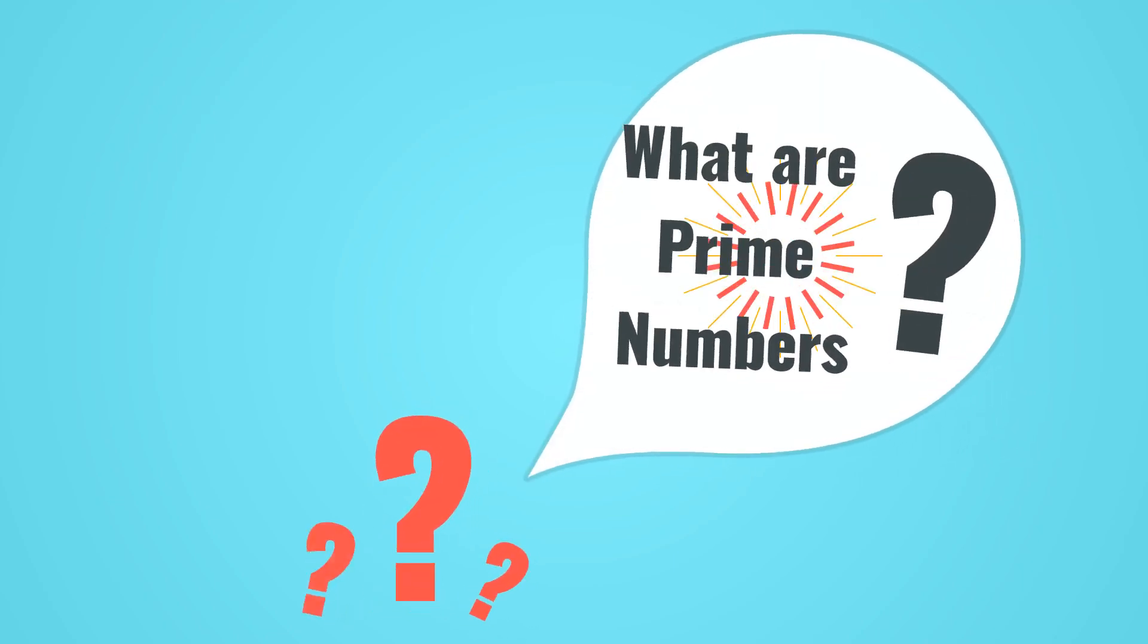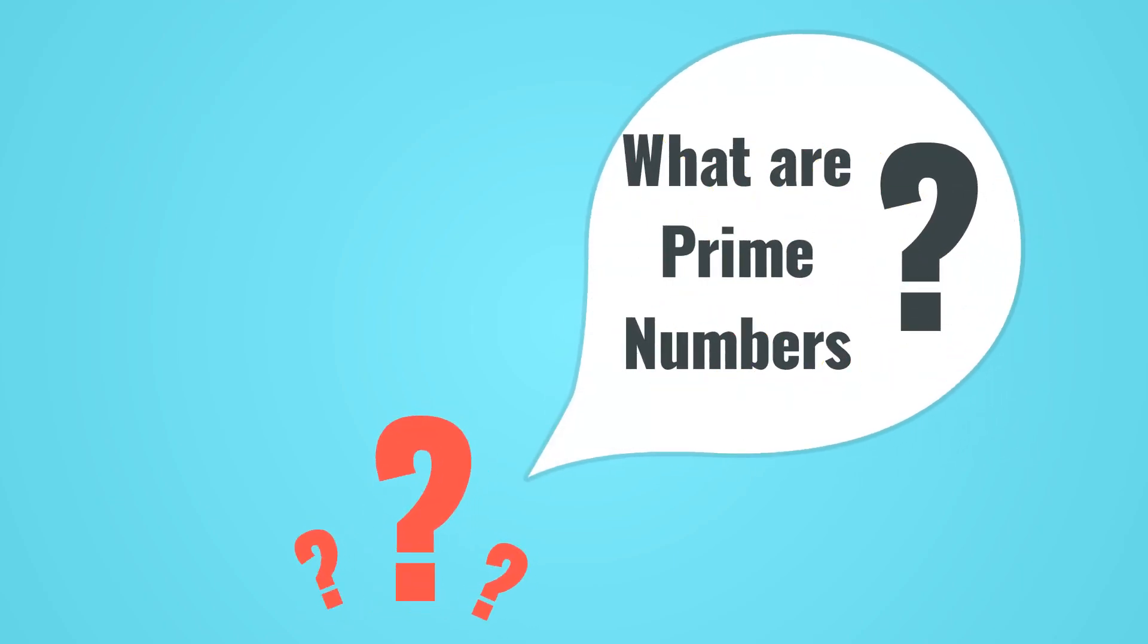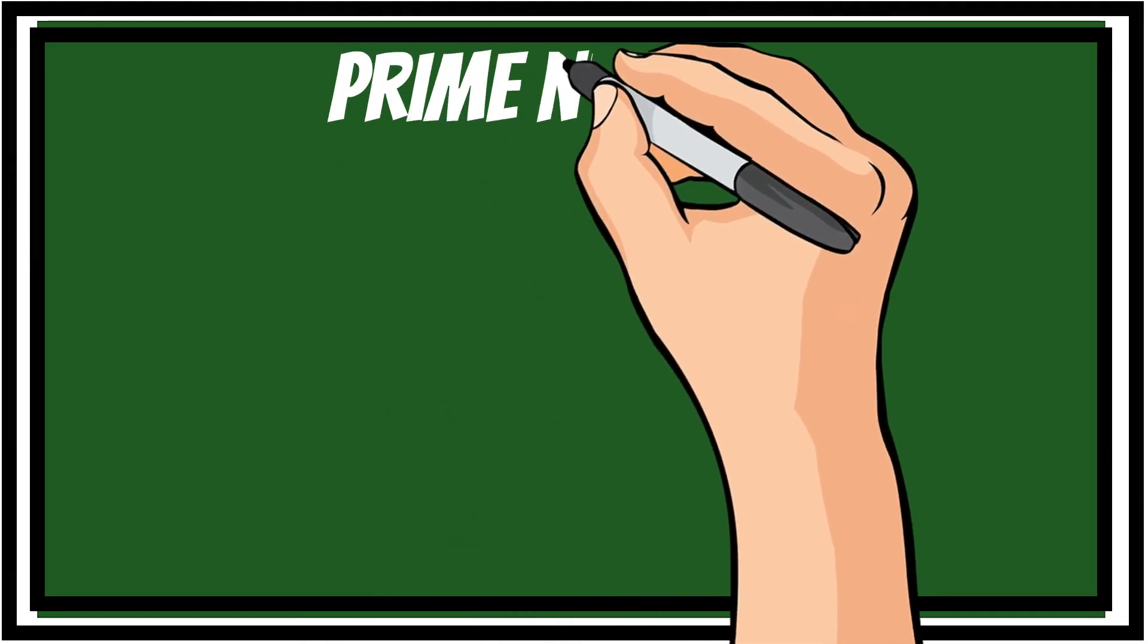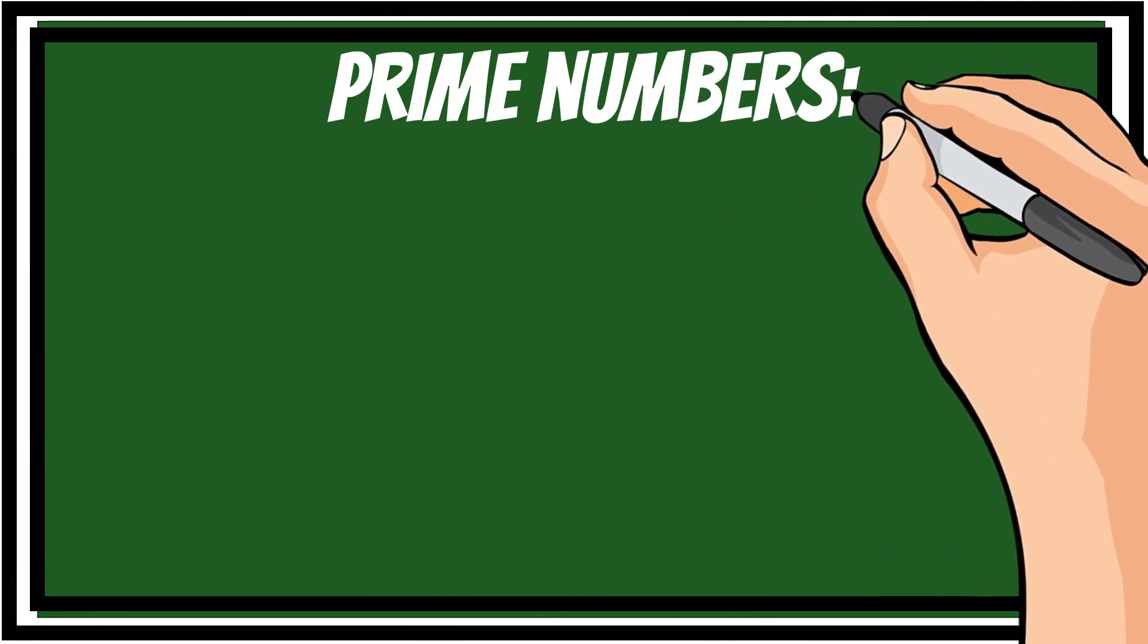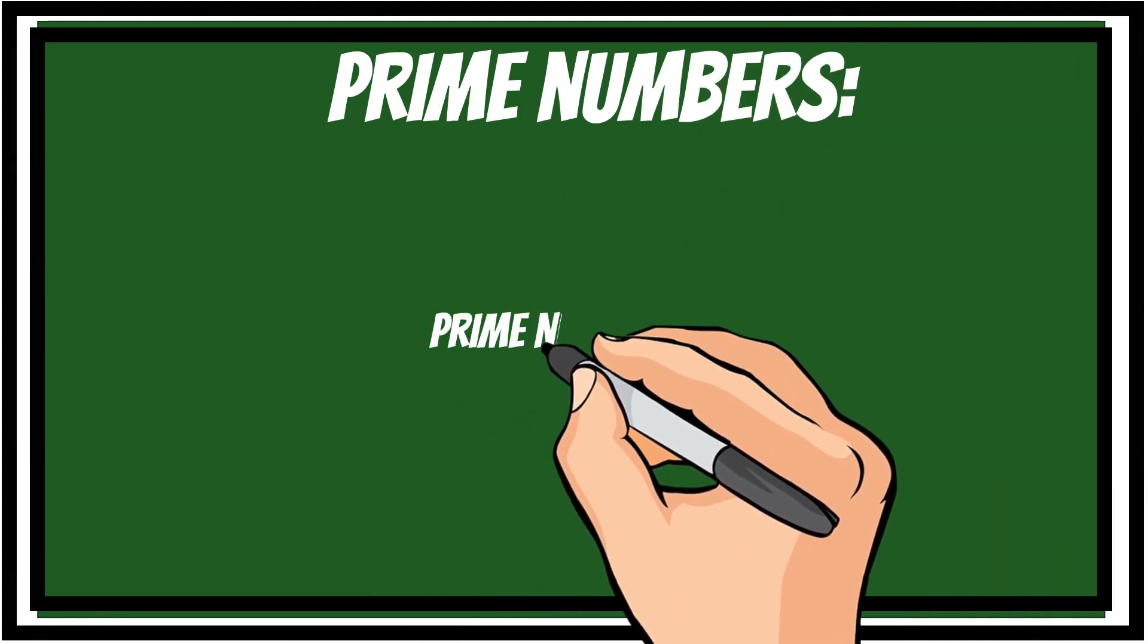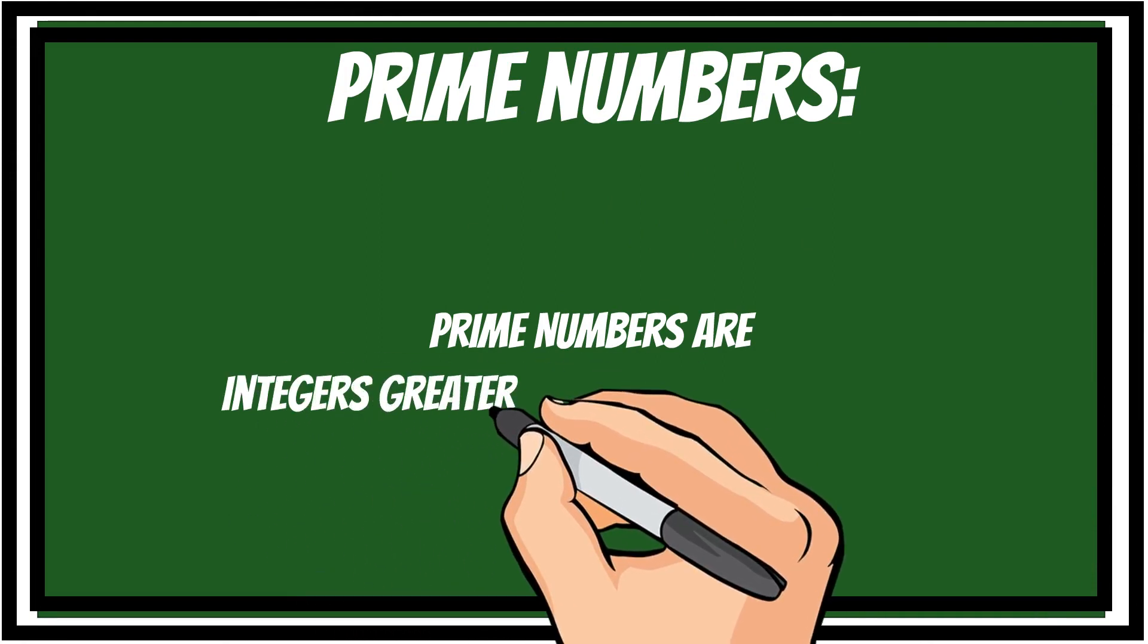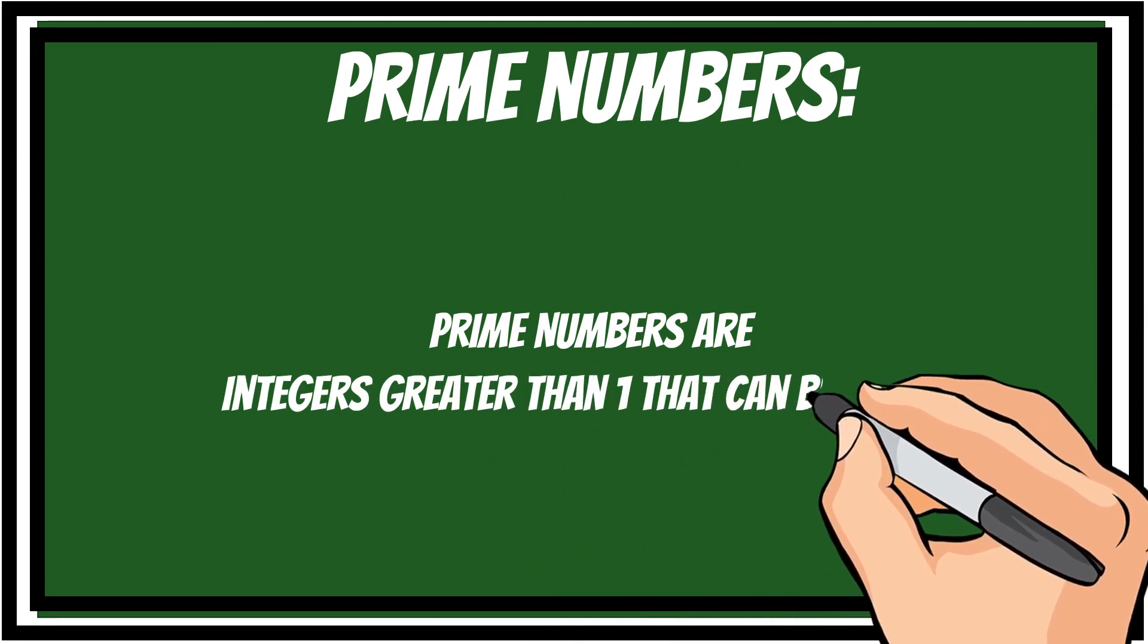But first, what are prime numbers? Prime numbers are numbers with exactly two factors. Prime numbers are whole numbers greater than one, and the only factors that they have is one and the number itself.